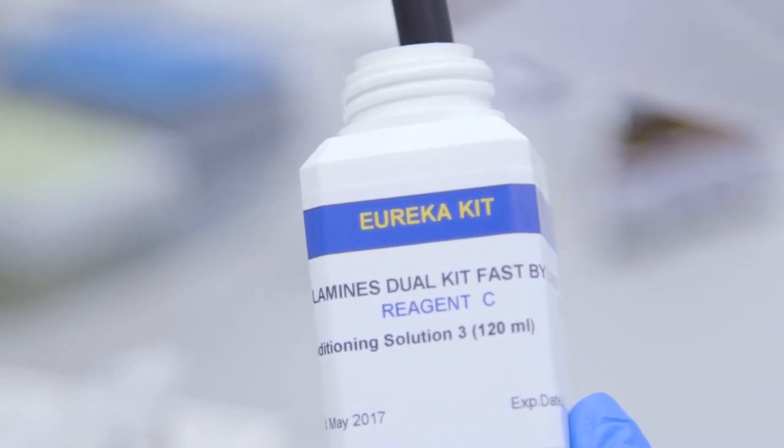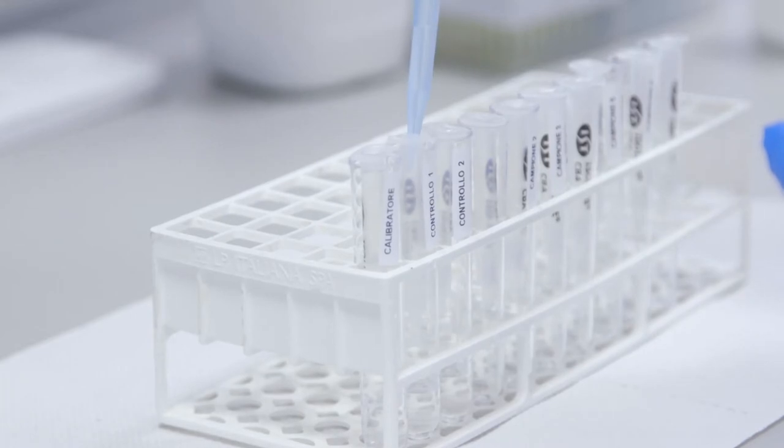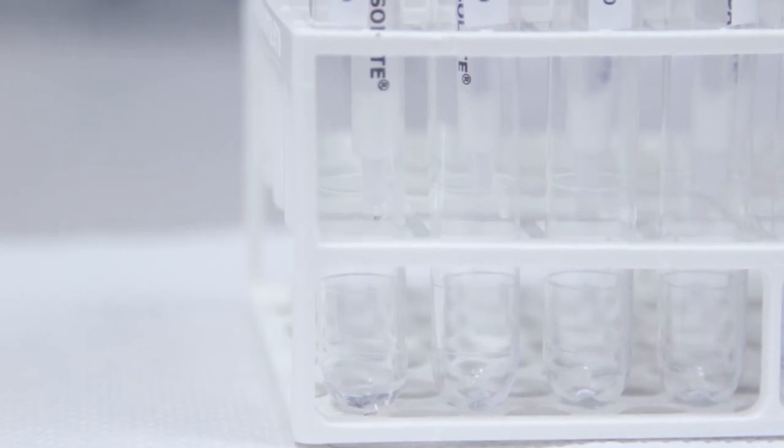Finally pour one milliliter of reagent C conditioning solution one into the columns and let the solution flow through the column at a flow rate of one milliliter per minute drop by drop.